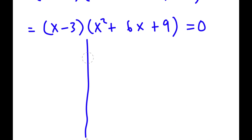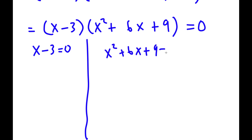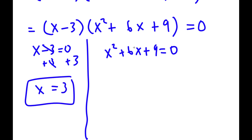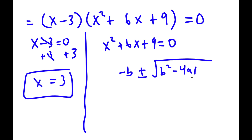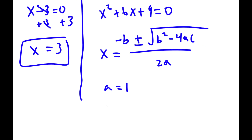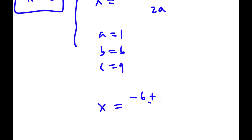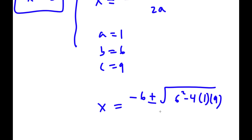This gives me two equations. For x minus 3 equals 0, adding 3 on both sides gives x equals 3. For x squared plus 6x plus 9 equals 0, I use the quadratic formula: negative b plus or minus the square root of b squared minus 4ac, all over 2a. Here a equals 1, b equals 6, and c equals 9. So x equals negative 6 plus or minus the square root of 6 squared minus 4 times 1 times 9, all over 2 times 1.